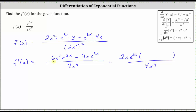If we factor out 2x e to the 3x from this first term, we're left with a factor of 3 and a factor of x, which gives us 3x minus. If we factor 2x e to the 3x from 4x e to the 3x, we're left with a factor of 2.